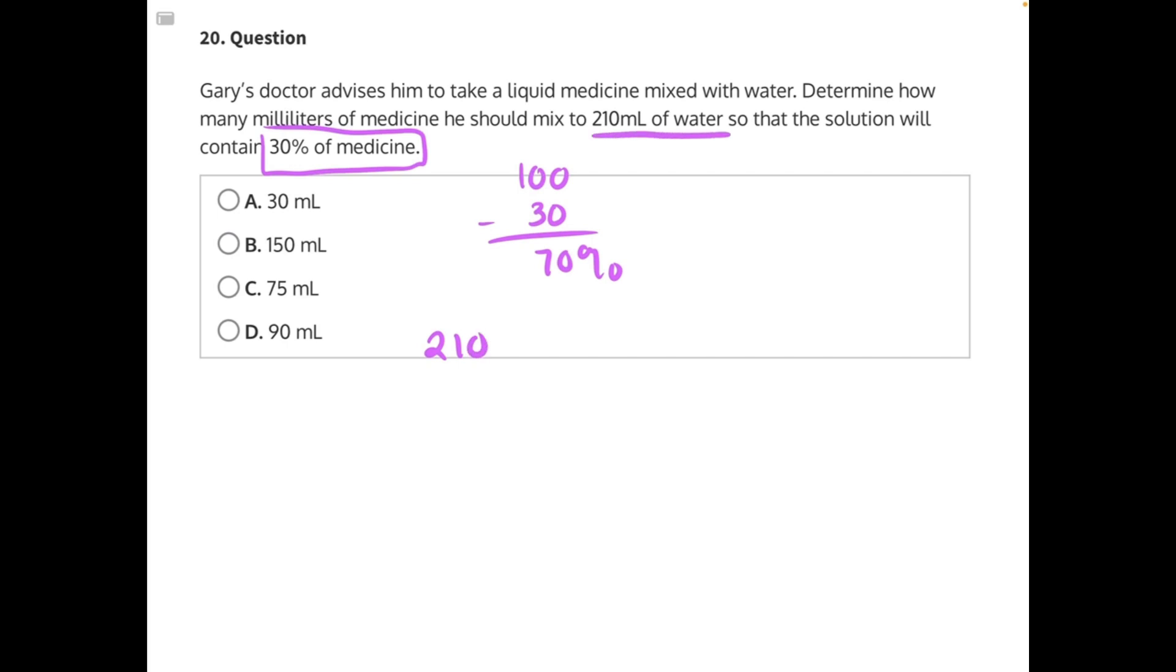210 milliliters of water out of an unknown total amount of solution is equal to 70% out of 100. And then we can cross multiply to find our answer. 70x is equal to 21,000.